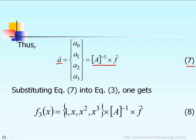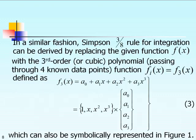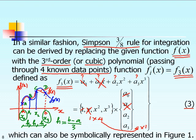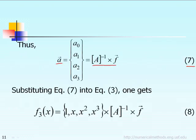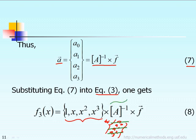Let's review equation 3. It says that F3 of X is equal to [1, X, X², X³] times the unknown vector A. So when we see equation 7, F3 of X according to equation 3 is equal to that row vector times the unknown vector A0, A1, A2, A3. Now we can replace this unknown vector A0, A1, A2, A3 by capital A-inverse times F, and that's what we did here.